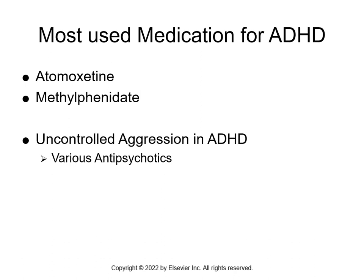Key medications include atomoxetine and methylphenidate, among several others. The main point is that these are stimulants — give them in the morning, monitor for weight loss, and monitor for insomnia. For children or adults with uncontrolled aggression, various antipsychotics are used.